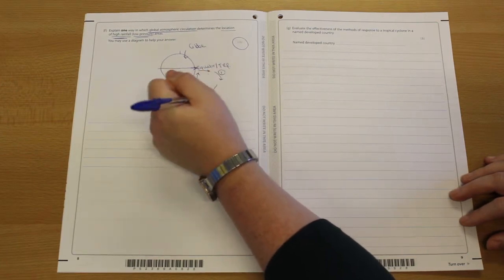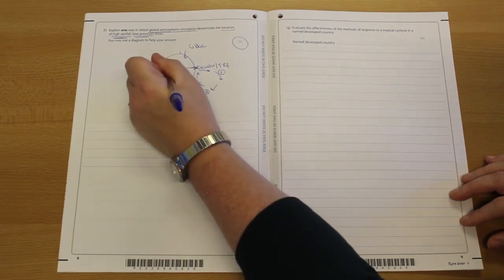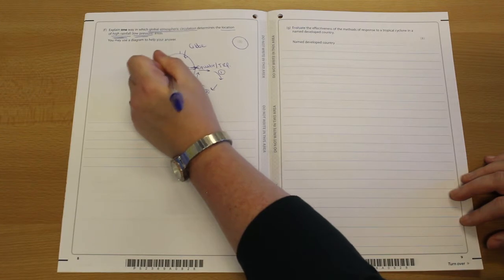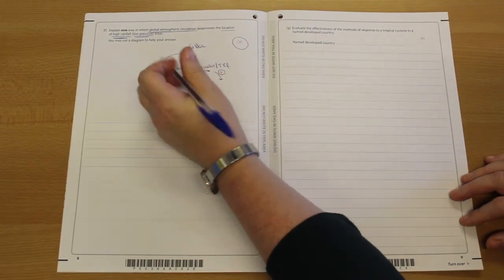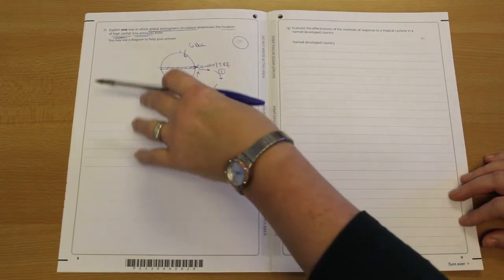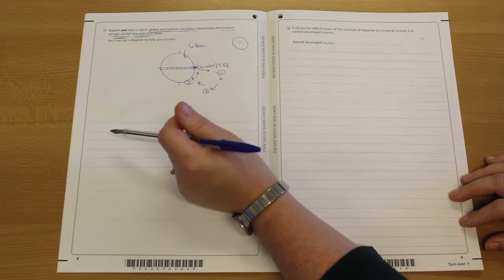I can then pick up the further two marks by my diagram actually working for me and explaining why, along this band here, zero latitude, the equator, it's hot and it's wet. I don't then think I need to repeat myself by writing about it here.